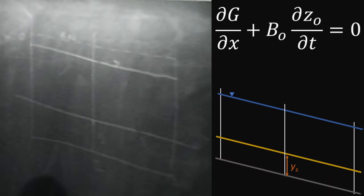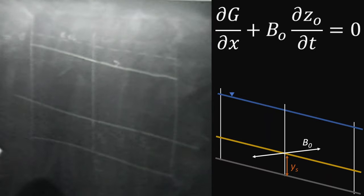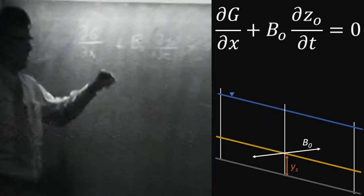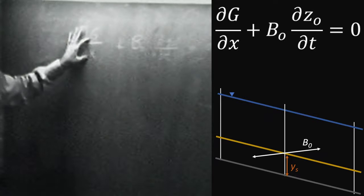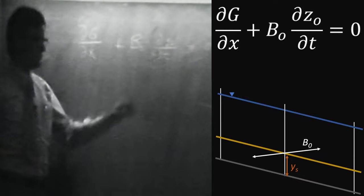B sub zero is the width of flow. If we're going to apply that change in bed times B sub zero, that gives a change in cross-sectional area, which must be balanced by the rate in which the sediment load is changing as the load moves downstream.